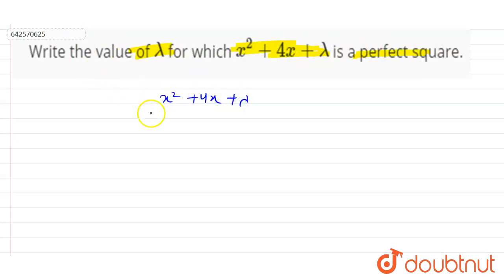Now this can also be written as x² + 2(x)(2) + λ. We know that (a + b)² = a² + b² + 2ab.